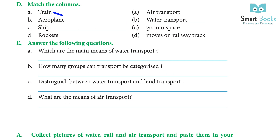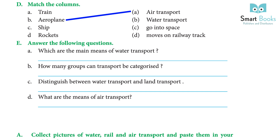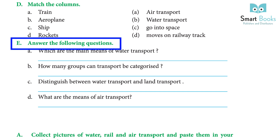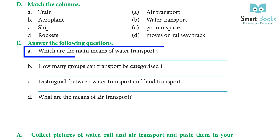(d) There are three means of transport. Answer: true. Exercise D — Match the following columns. (a) Train — answer: moves on railway track. (b) Aeroplane — answer: air transport. (c) Ship — answer: water transport. (d) Rocket — answer: goes into space.